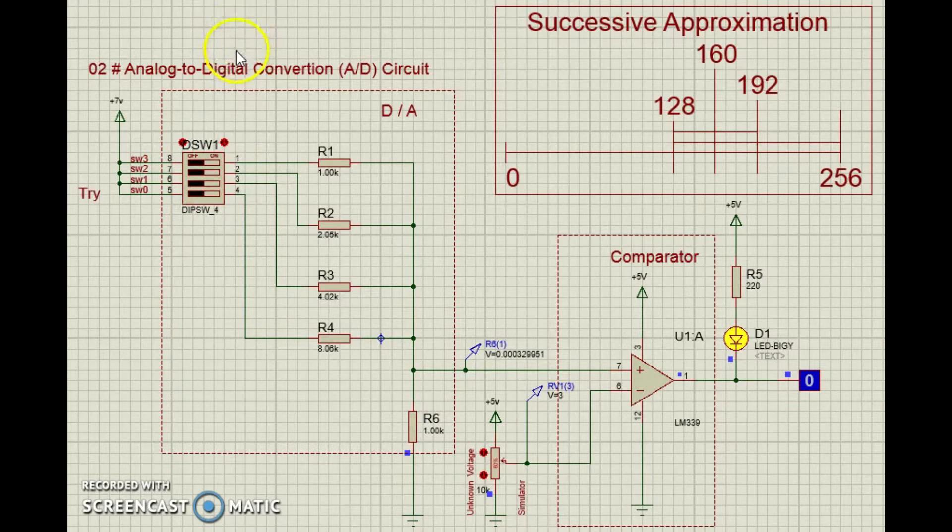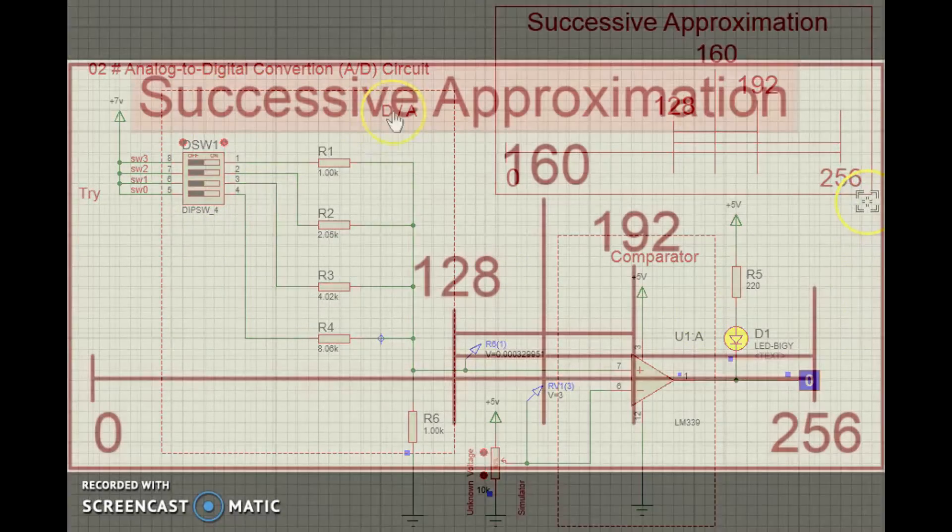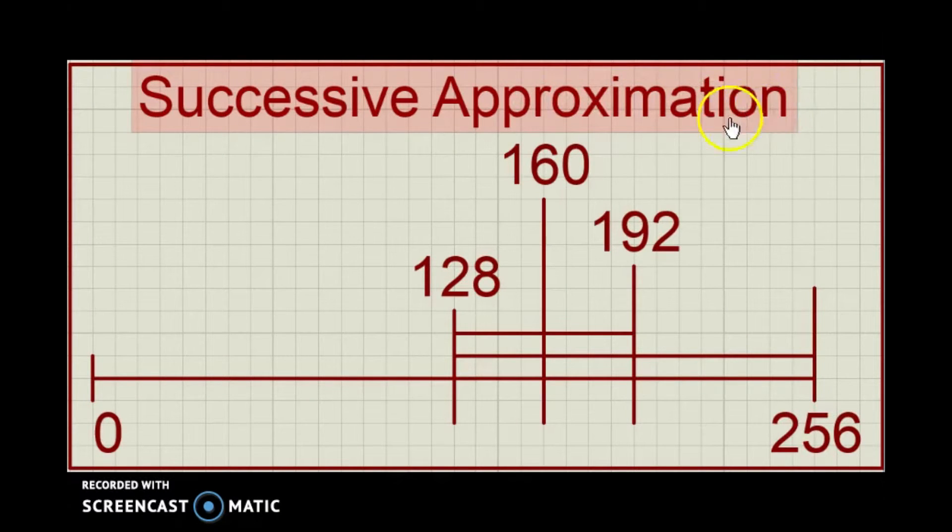A much more efficient way is to use successive approximations. Suppose you are asked to guess a number between 0 and 256, and the only information you get is whether your guess is too high or too low. The best strategy is to guess at half the range and keep halving. So, your first guess should be 128.